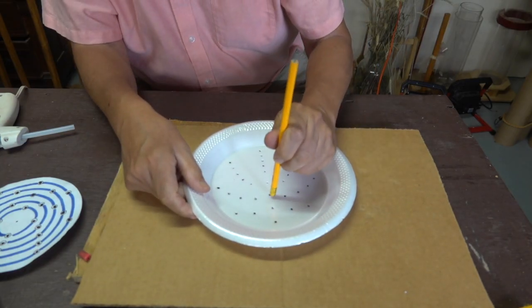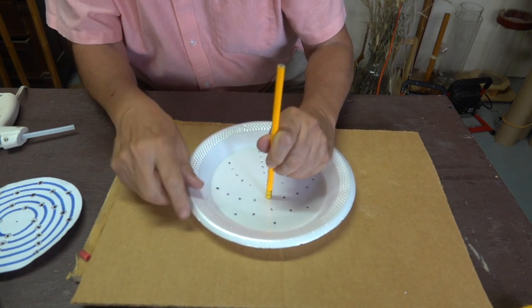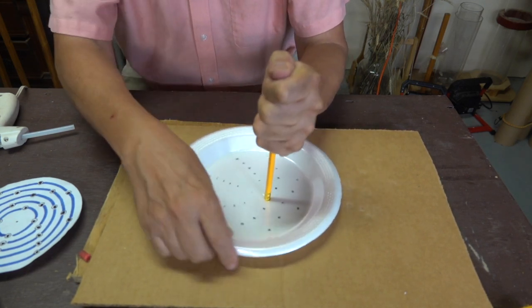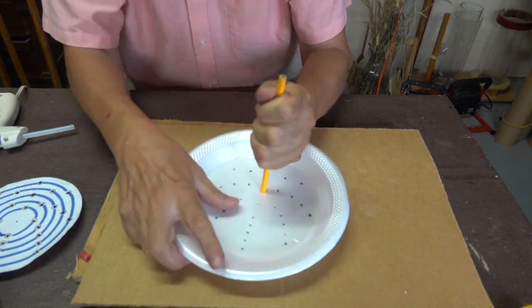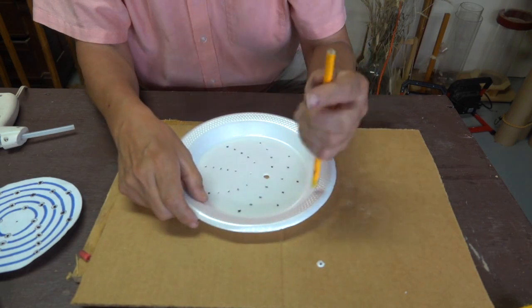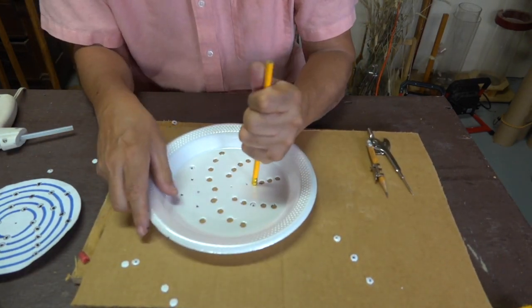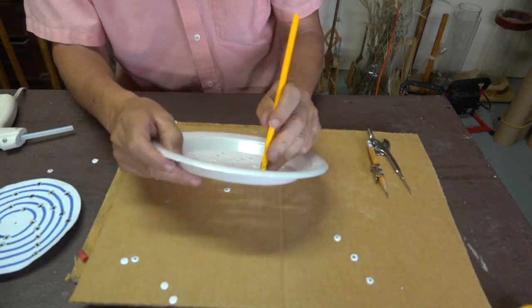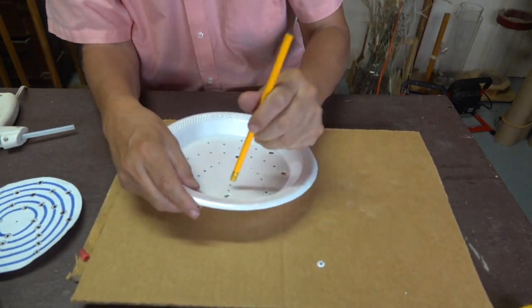I'll start by placing the pencil over one of the holes, pressing down firmly. I'll turn the plate underneath it until it cuts through the foam. And there's the first hole. Now it's simply a matter of continuing with that same method over each one of the marks until the holes are cut out.